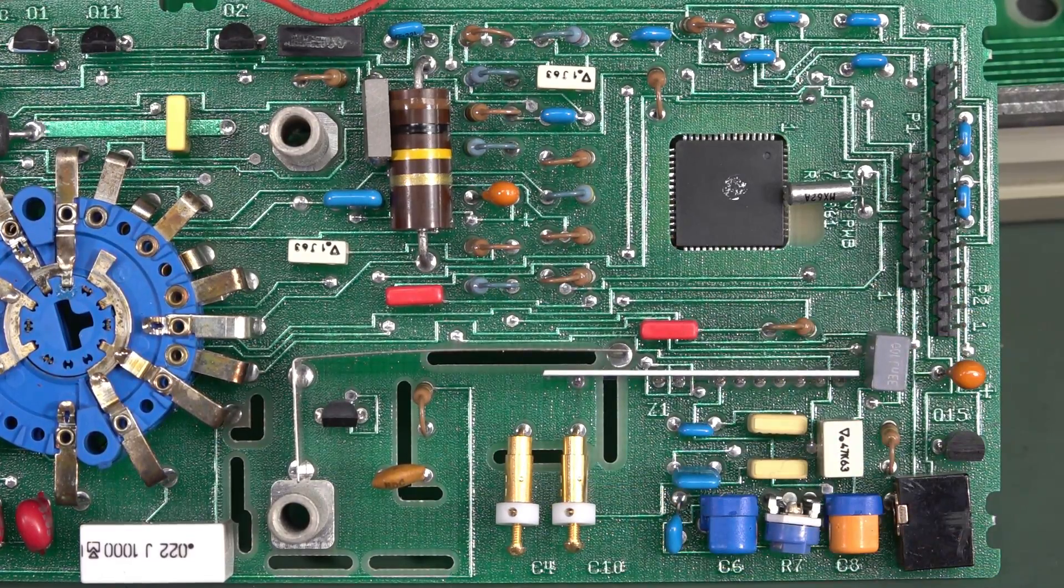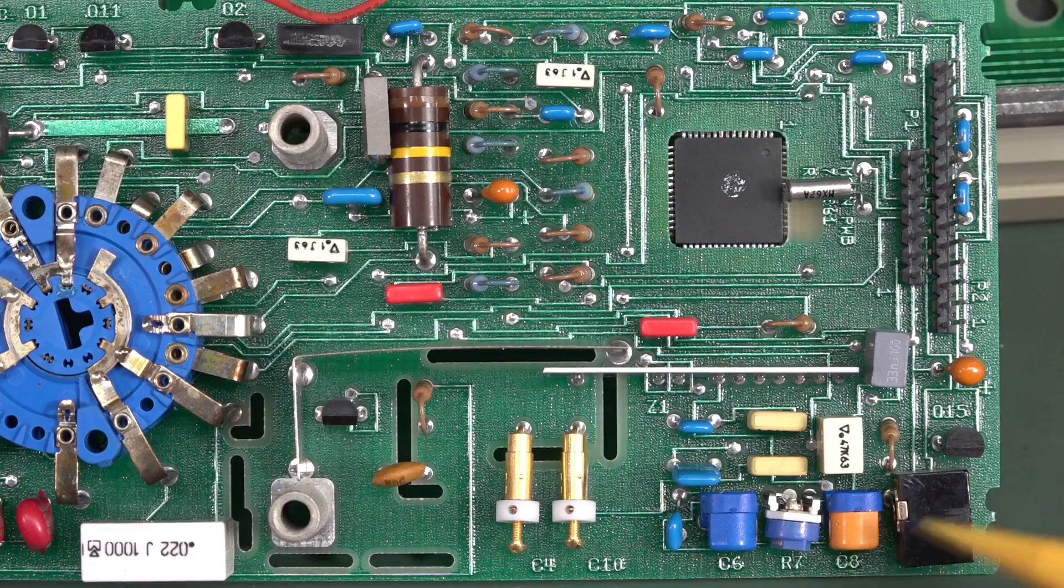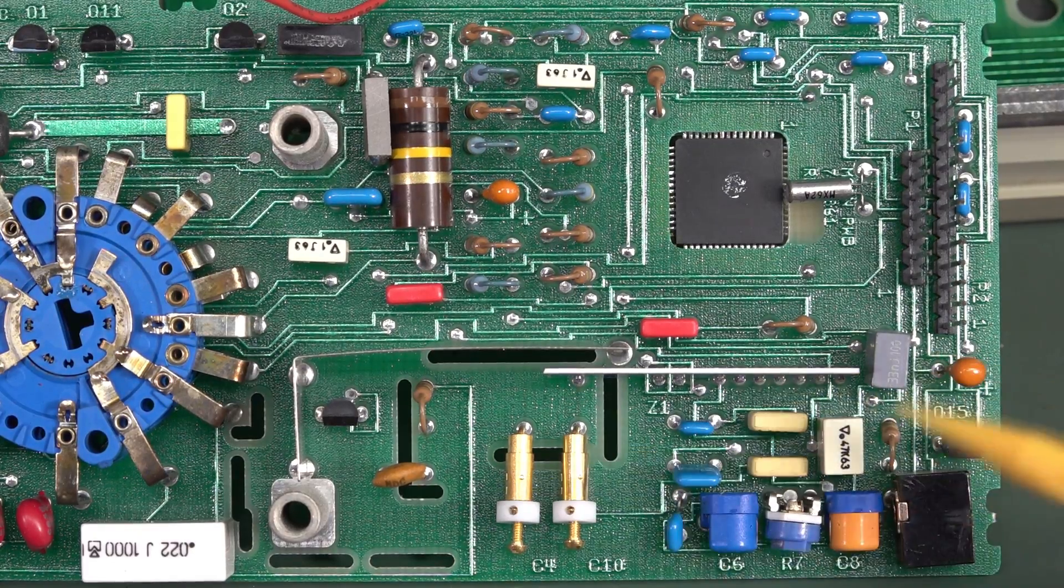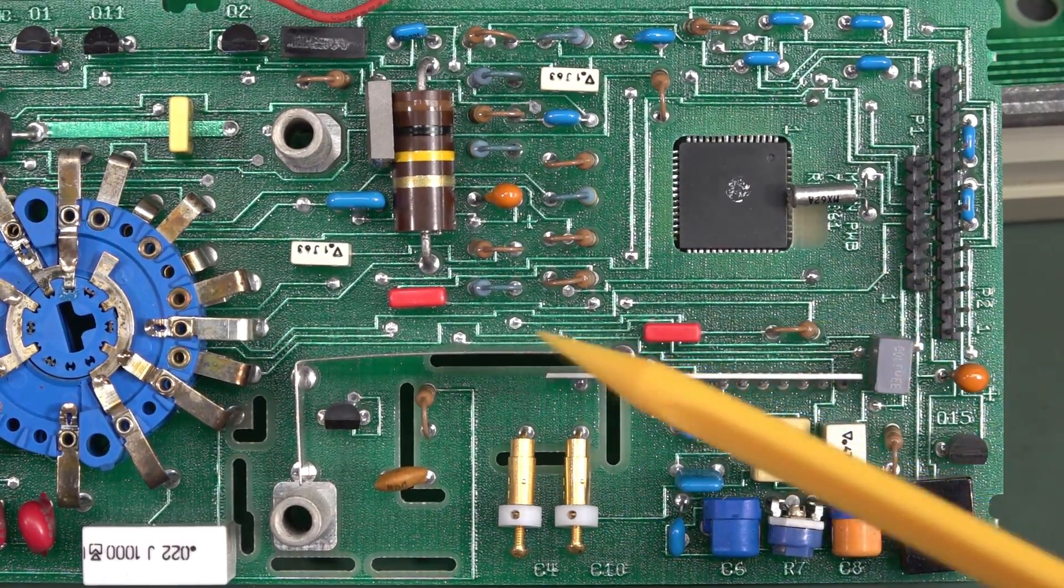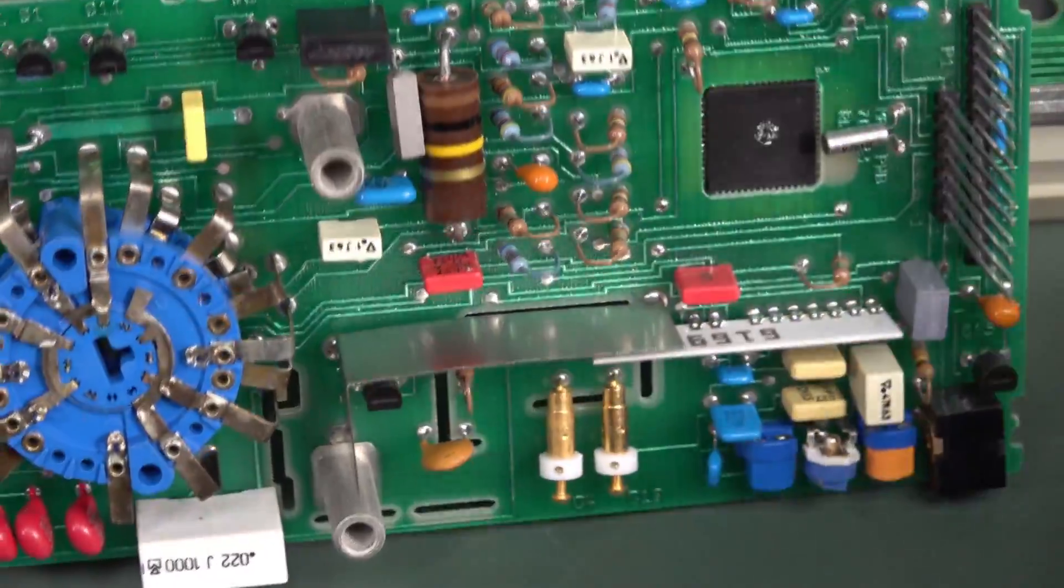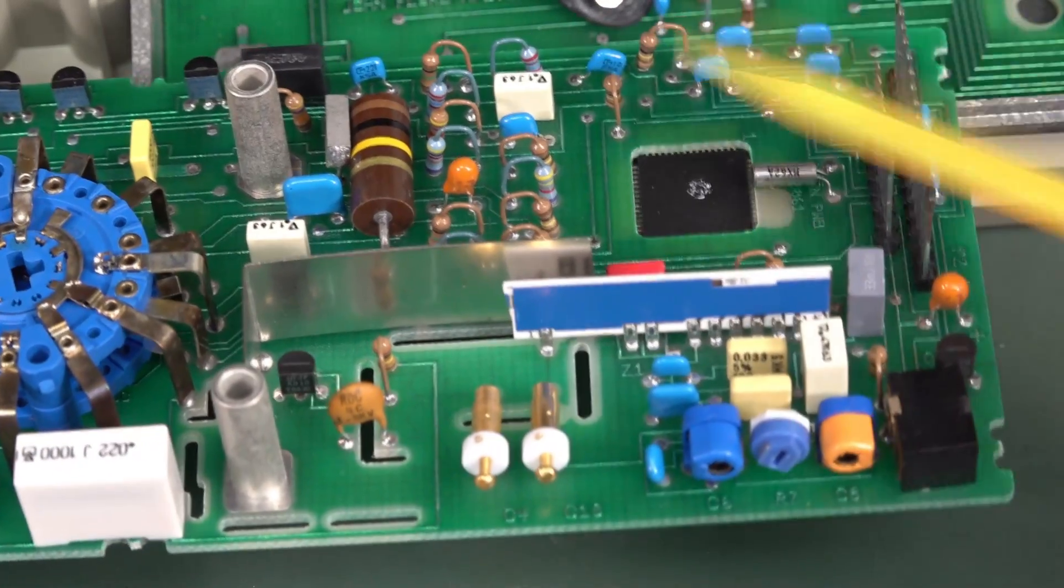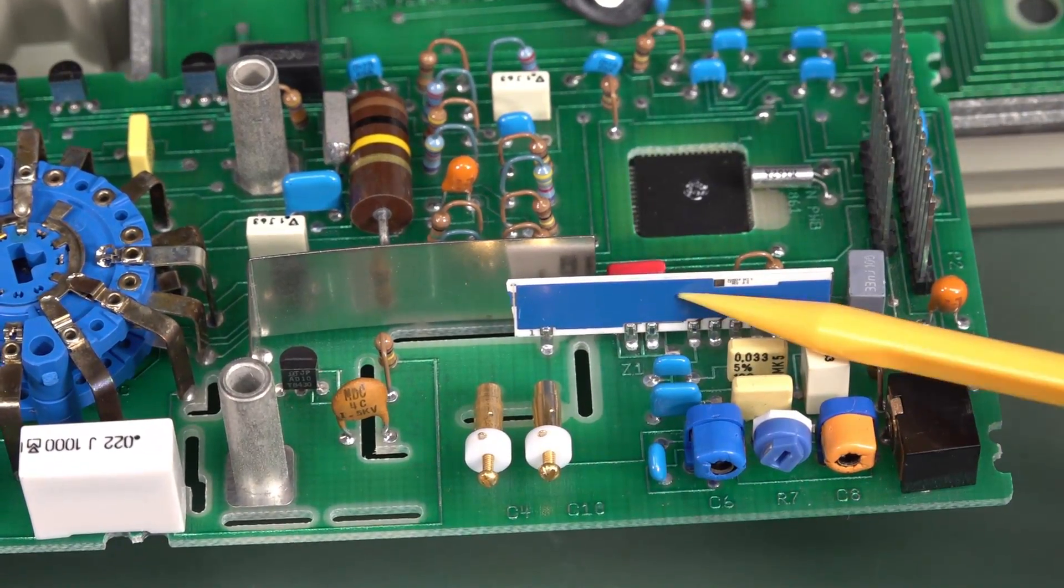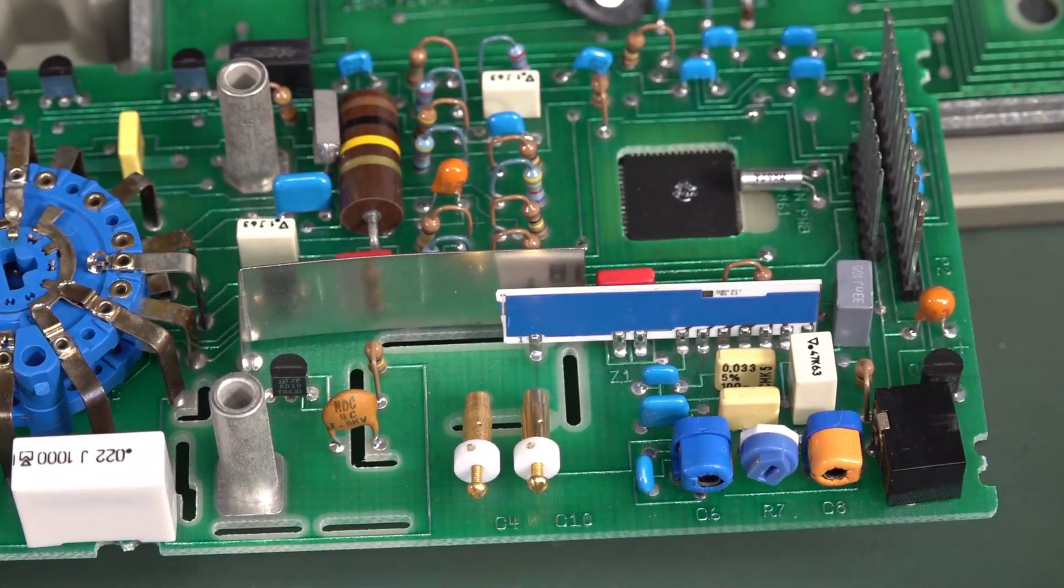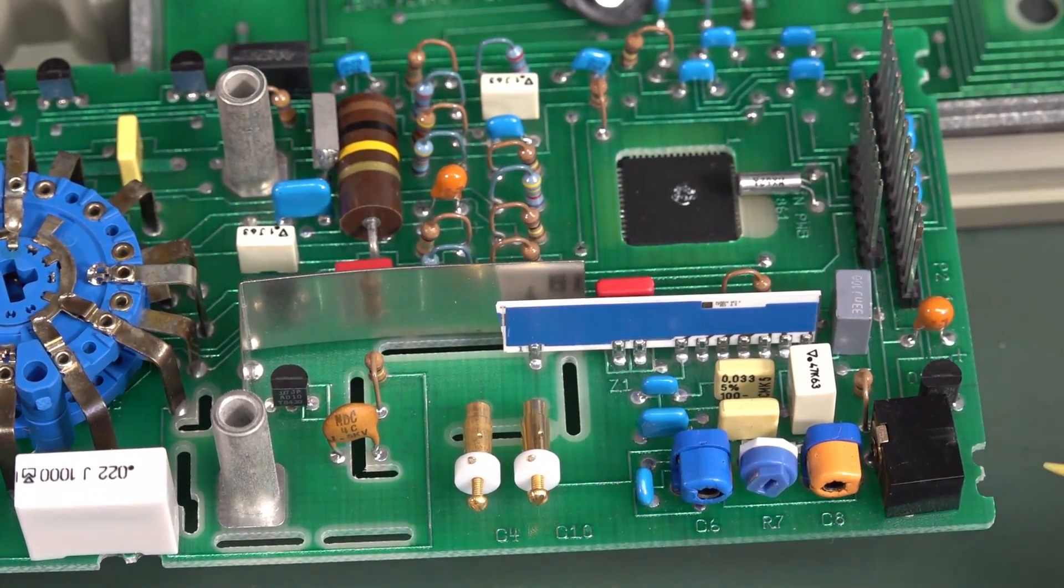couple of trimmer caps down here. And another trimmer cap, trimmer resistor, trimmer cap. So we're doing all sorts of AC stuff there. But then we've got a little shield there. Thank you very much. And there's our thick film hybrid resistor network in there. So that's doing all the magic. Those things don't drift over the years.